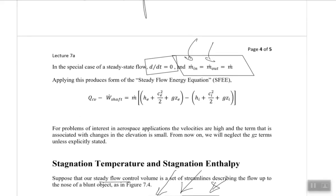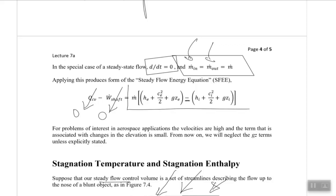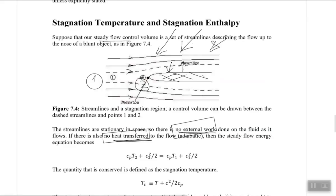Moving to the steady flow energy equation: the heat transfer is zero, and for the steady flow streamline the work done is also equal to zero. We are also assuming the object is not changing its position, so there is no change in z — the potential energy term is also zero. The mass is constant, so we ignore that part as well, giving us the simplified steady flow energy equation.